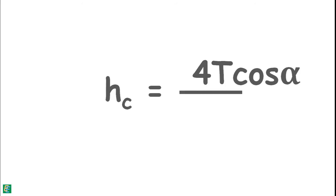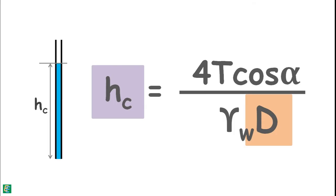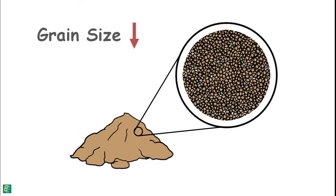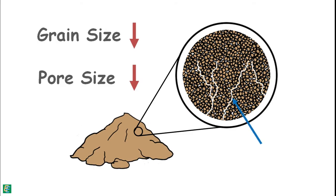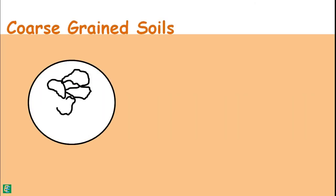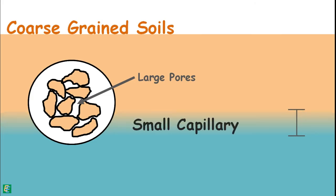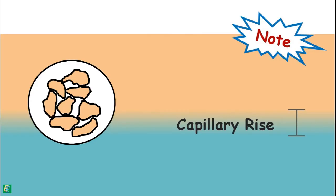From the equation, height of capillary rise is inversely proportional to the diameter of the tube — smaller the diameter, greater the height of the water column. In soils, as grain size decreases, the size of voids or pores also decreases. These small-sized pores develop narrow tube-like structures that act as capillary tubes of small diameter, resulting in high capillary water rise in fine-grained soils. Conversely, coarse-grained soils enclose larger voids and height of capillary rise will be smaller. The important point is that capillary rise is dependent on pore size, not on grain size.